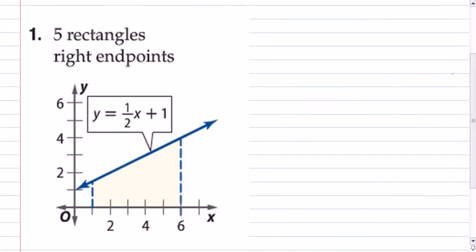We have to find five rectangles that have right endpoints with this equation right here, which is already drawn out for us. That makes it a little bit easier.